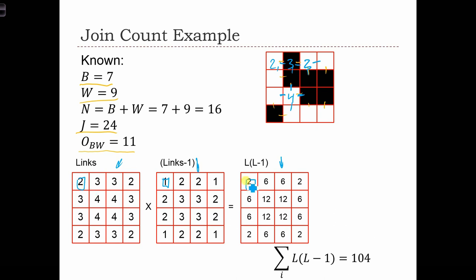So 2 times 1 equals 2. To get this one over here, this location had four links. We multiply it by links minus 1, which is 3, to get 12. 4 times 3 is 12.